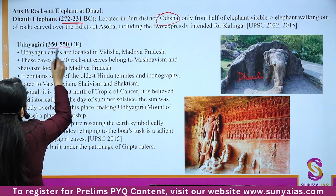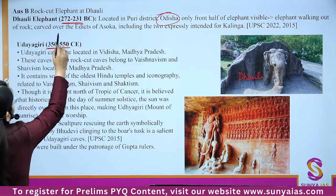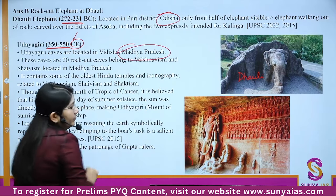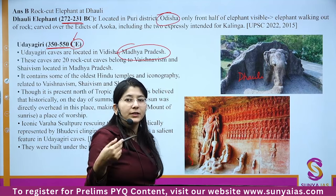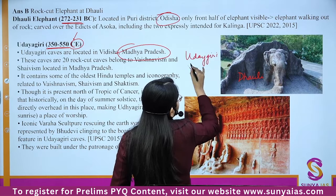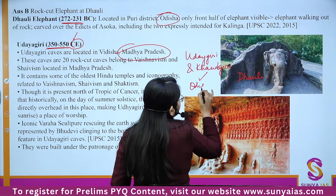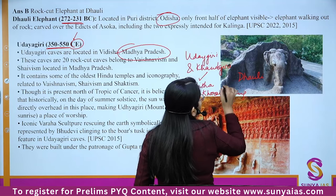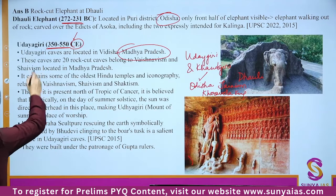Important distinction: Udaigiri in MP is different from Udaigiri-Khandagiri in Odisha. Udaigiri-Khandagiri got patronage from King Kharavela and is related to Jainism, whereas Udaigiri in MP is related to Vaishnavism, Shaivism, and Shaktism and got patronage from Gupta rulers. Next: Lingaraj Temple — 11th century AD, built by Somavanshi king Yayati I. The chief deity is Lord Shiva (related to Shivalinga). It is the largest temple of Bhubaneswar, built in red sandstone.